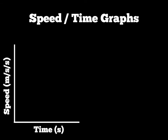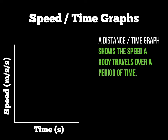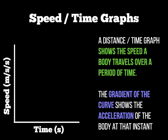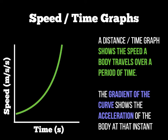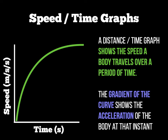The second set of graphs are speed-time graphs. A speed-time graph shows the speed a body or object travels over a period of time. In this graph we're looking at acceleration. There are three shapes to look out for: a straight line means constant speed or constant acceleration; then there's rapid acceleration; and finally deceleration.